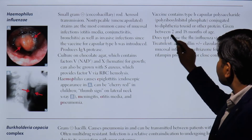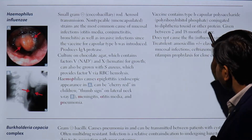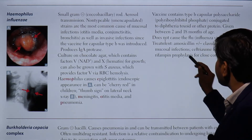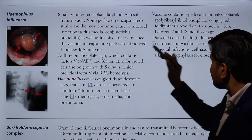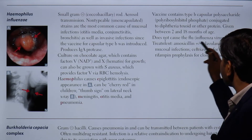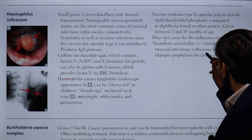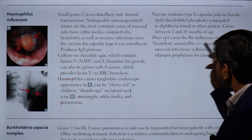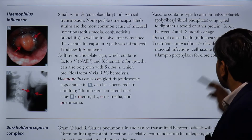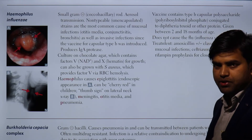The vaccine is given between 2 and 18 months of age. Note: this organism does not cause the flu — flu is caused only by the influenza virus. Treatment for bacterial infection includes amoxicillin-clavulanate for mucosal infections. For meningitis, ceftriaxone is used. Rifampicin is given as prophylaxis for close contacts to remove colonization.